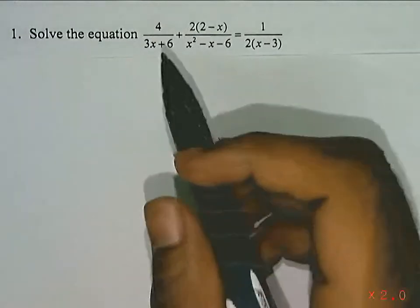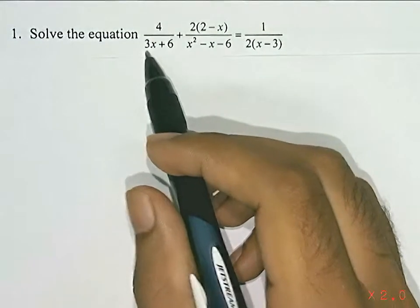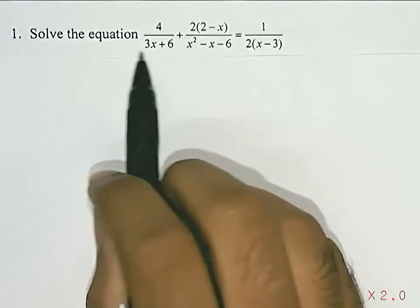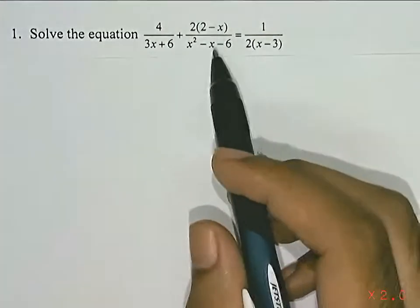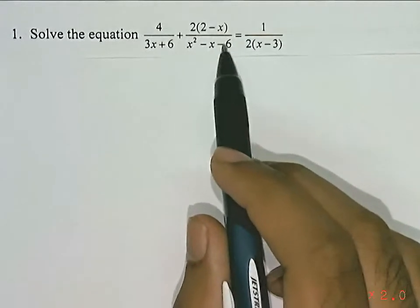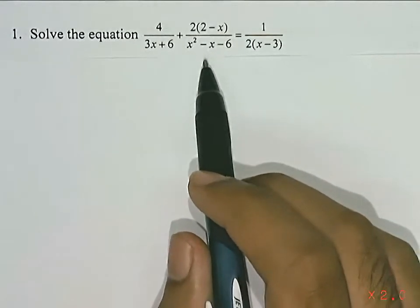The first is this, the bottom one, the denominator. By removing the three, I'll be able to factorize it. And the other one is here, also the denominator, which is a quadratic equation.